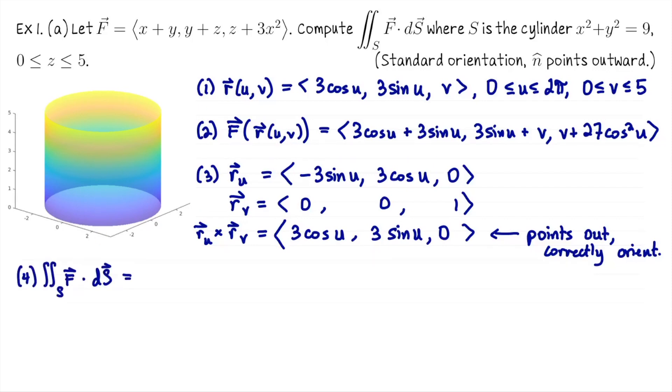Next step is to set up our integral. So this flux integral is now going to be a double integral, 0 to 2π for u, 0 to 5 for v, F of R(u,v) dot what we computed in step 3, that cross product, dv du. Looks like a big computation, but it is doable by hand. Notice the third coordinate is going to get multiplied with 0, so that's fortunate.